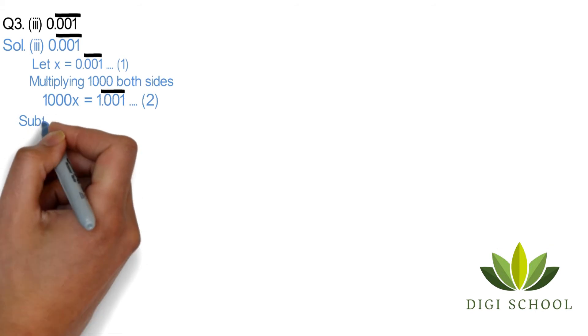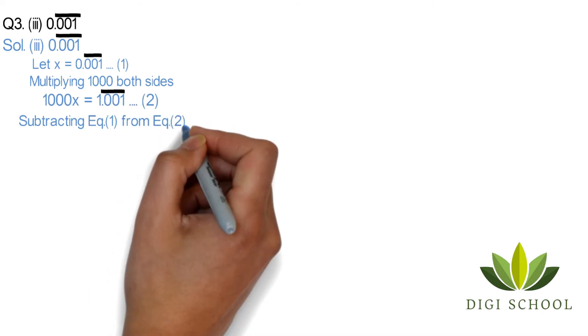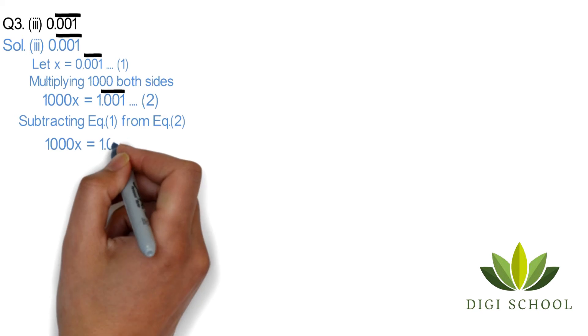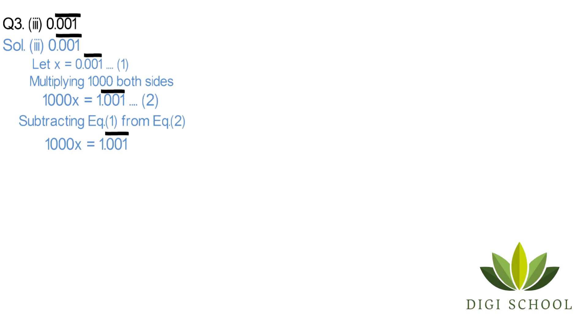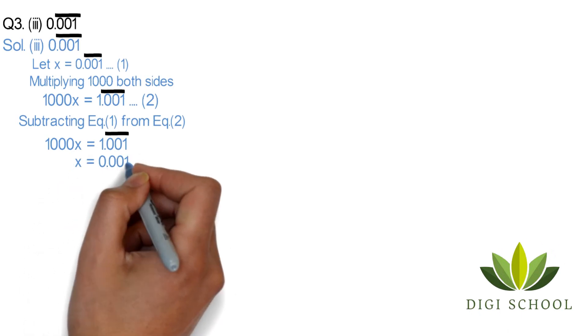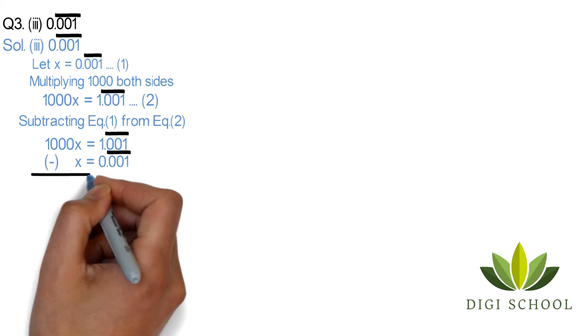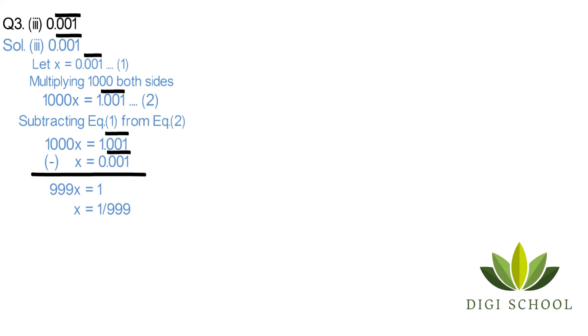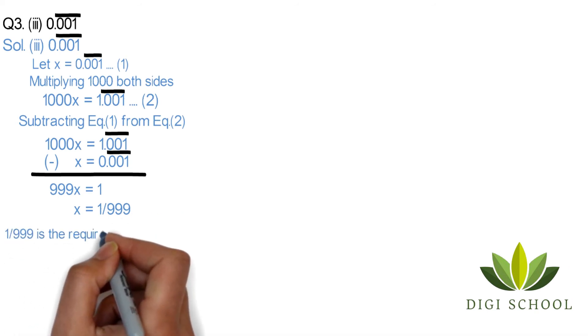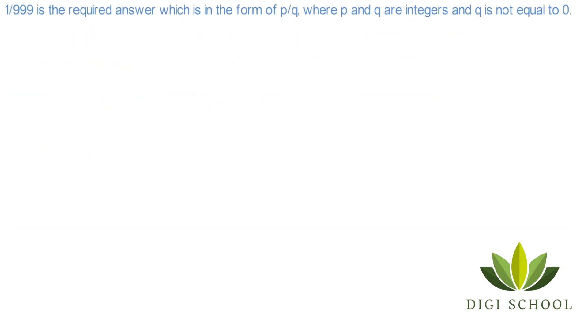Subtracting equation 1 from equation 2: 1000x equals 1.001 bar. The difference would be 999x, or triple 9 x, equals 1, and x equals 1 upon 999. 1 upon 999 is the required answer, which is in the form of p upon q where p and q are integers and q is not equal to zero.